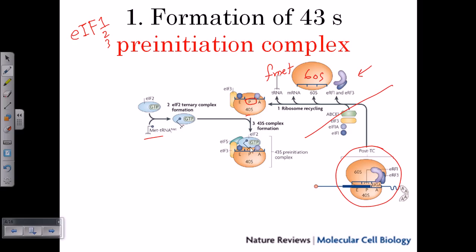Looking carefully at this image, the tRNA is not yet properly placed — it's not properly attached to the P site because there is no mRNA present yet. Without mRNA, the tRNA cannot pair with a codon. This is called the 43S pre-initiation complex: the 40S subunit with eIF3 and eIF5 blocking the E site, and eIF2 bound to the tRNA with GTP — but no mRNA yet. This completes the first stage of eukaryotic translation initiation.